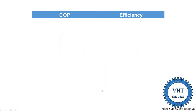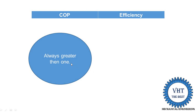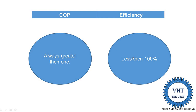The next point is that the COP of a VCR system is always greater than one. If we were to convert COP into the term of efficiency, the answer would be 150%, 200%, 350%, or 400%, which violates the rules of thermodynamics. That is why we use the term COP, while efficiency is always less than 100%.